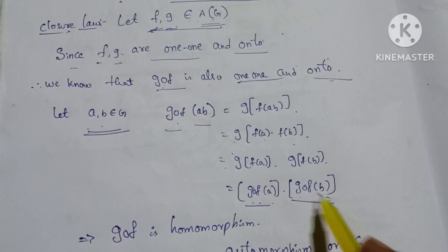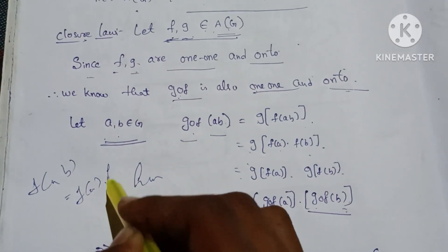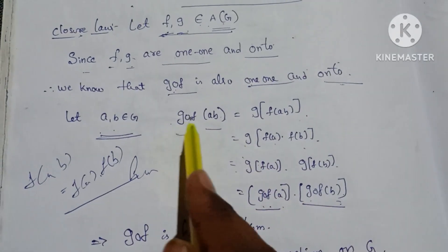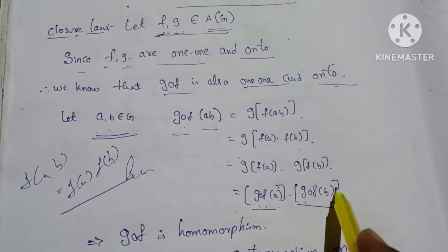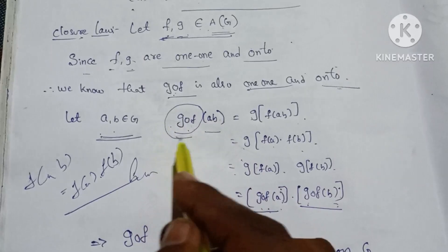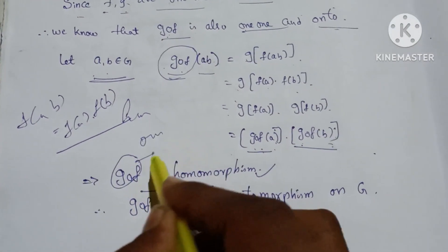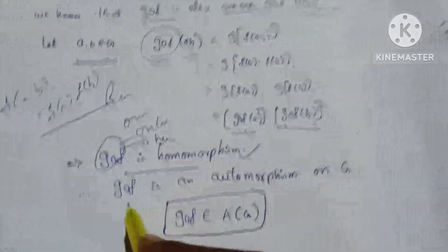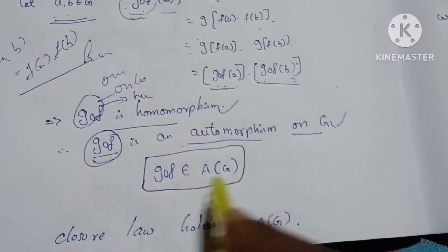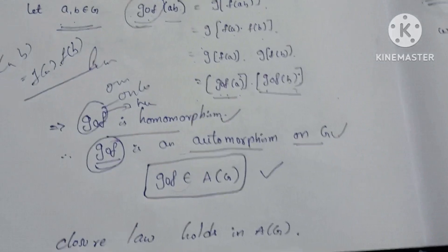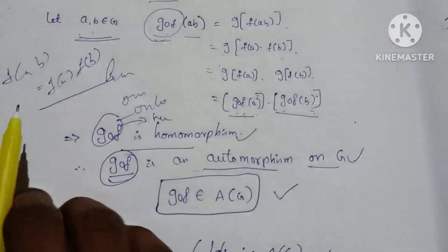We can prove the homomorphism. Since F of (a·b) equals F(a)·F(b), we have G circle F of (a·b) equals G circle F(a)·G circle F(b). Therefore G circle F is a homomorphism. So G circle F belongs to A(G). Therefore the closure law holds in A(G).